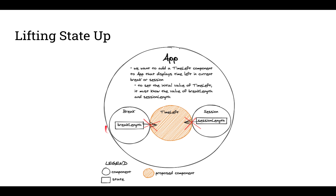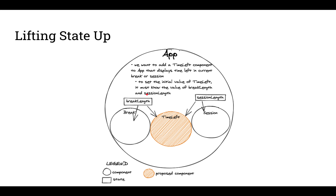However, we cannot share data between sibling components. Therefore, we must lift state up. Instead of having the break length inside the Break component and the session length inside the Session component, we'll have break length inside of the App and session length inside of the App. That way, we can use props to pass session length down to Session and session length down to TimeLeft to initialize the timer. We'll lift state up for break length as well, passing break length down to Break and using it to initialize the timer when necessary.